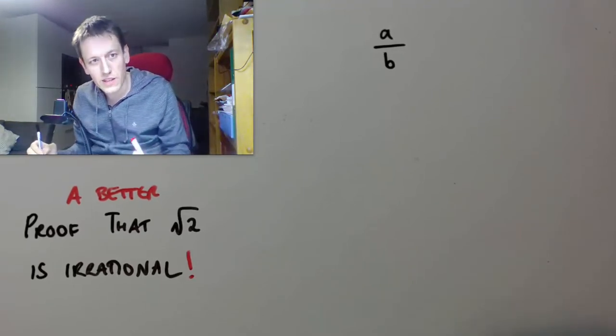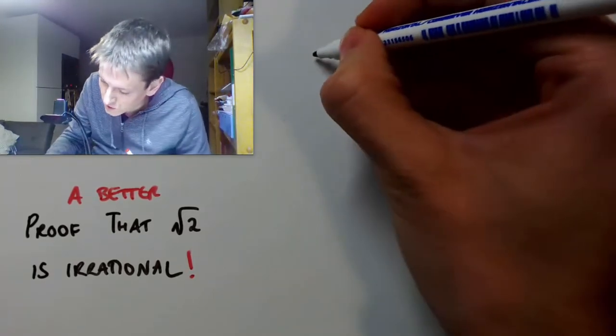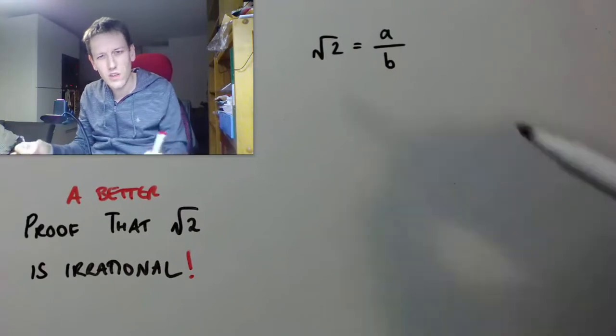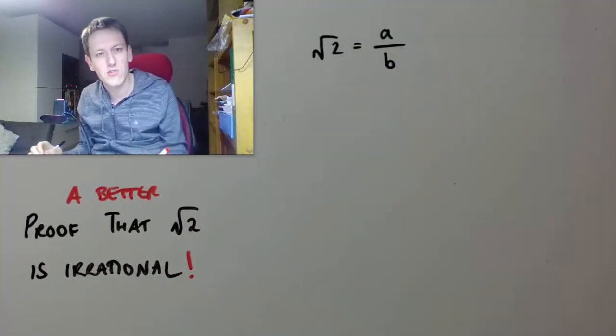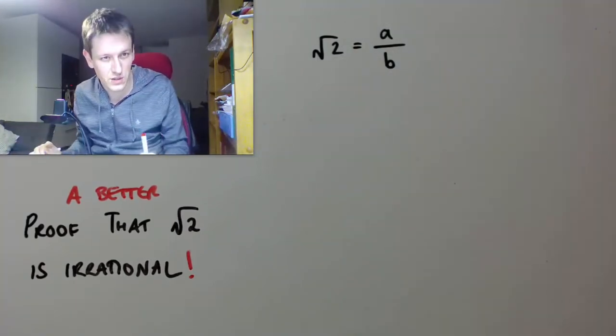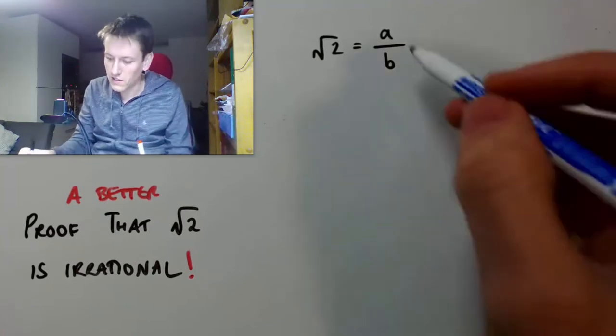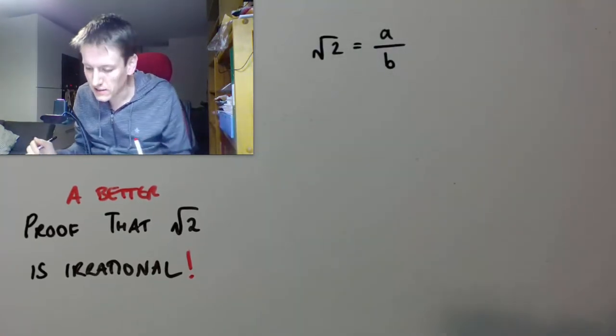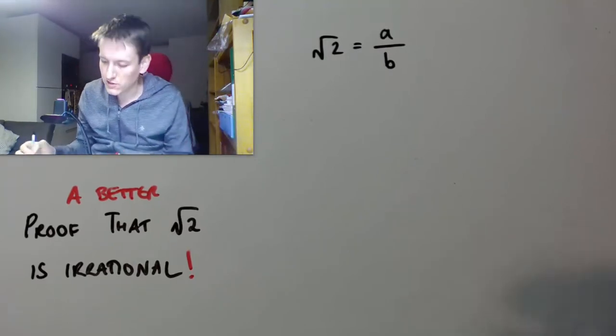So we start this proof in the same way as the standard proof, if you've seen it, which is to assume that it is rational, and if I can show that this statement is inherently contradictory, then effectively, I've shown that it's irrational. So I'm going to start by assuming that it is rational, and then derive some contradiction.